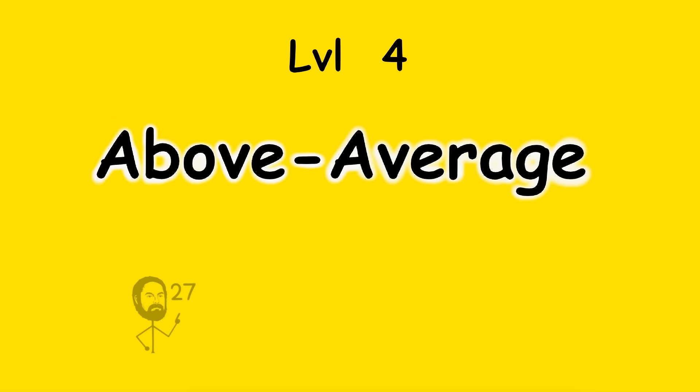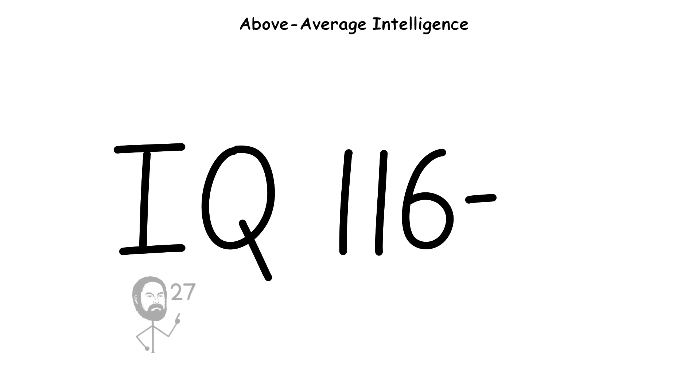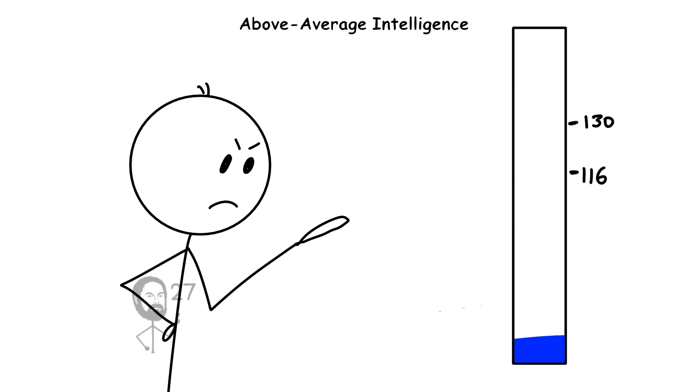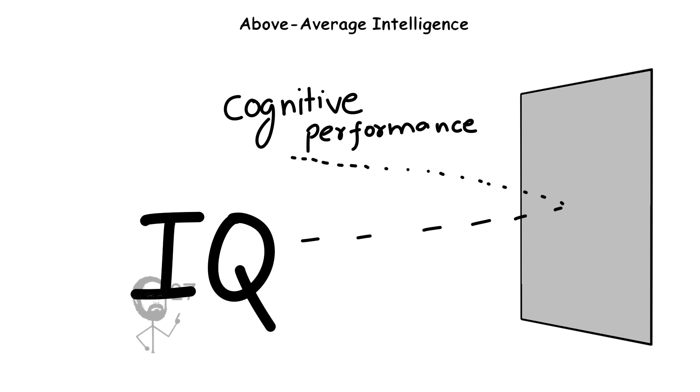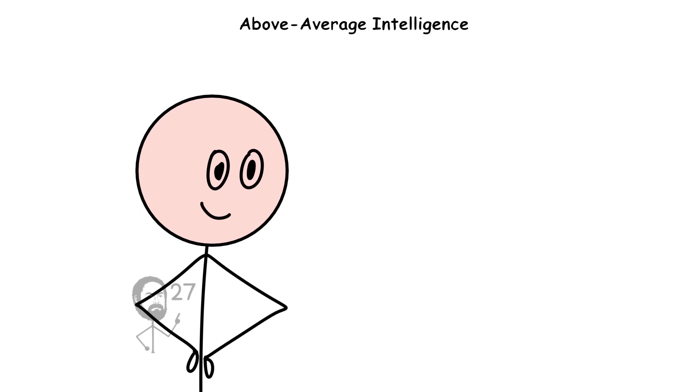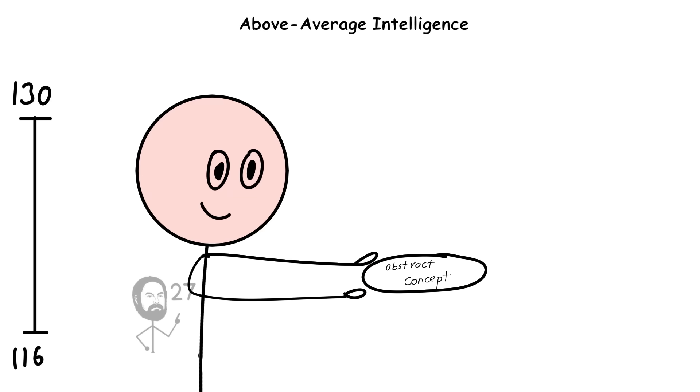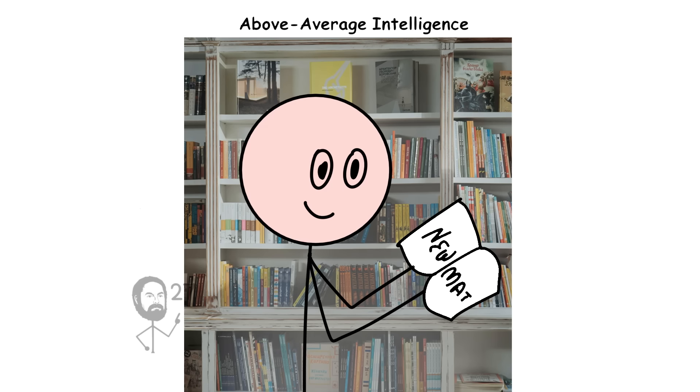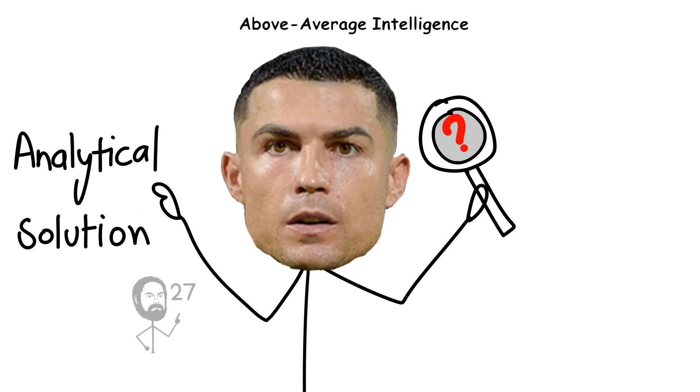Level 4. Above Average Intelligence IQ 116-130. An IQ between 116 and 130 reflects cognitive performance noticeably higher than the general population. Individuals in this range typically grasp abstract concepts quickly, learn new material with minimal repetition, and demonstrate strong problem-solving and analytical skills.